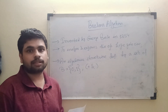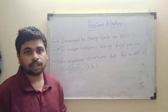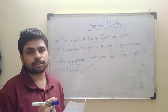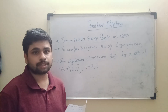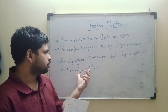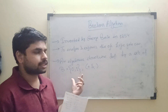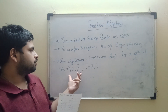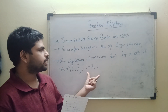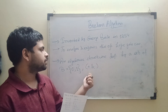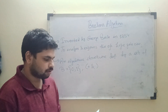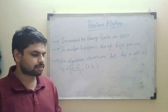In previous lectures we covered three types of number systems: binary, octal, and hexadecimal. Boolean algebra also operates within the binary number system using the set {0, 1}. It is operated through two types of operations: addition (plus) and multiplication (dot product).